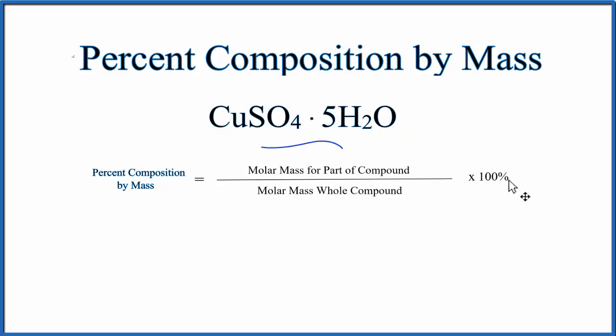Then we multiply that by 100, and that gives us the percent by mass of the H2O in copper sulfate pentahydrate. So let's do that.